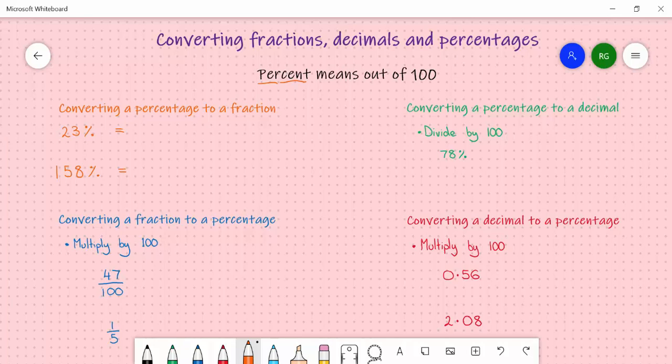A centurion is a Roman soldier in charge of 100 men. And cents, we have 100 cents in a dollar.